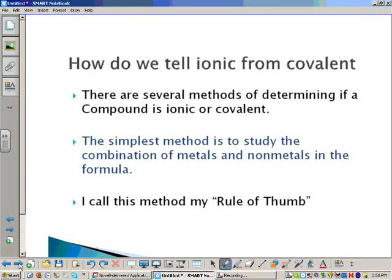So how do we tell if it's ionic or covalent? There are several different methods of determining if a compound is ionic or covalent. You can use electronegativity values, you can use locations on the periodic table. The simplest method is to study the combination of metals and nonmetals in the formula. This is what I refer to as my rule of thumb.